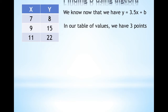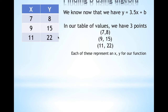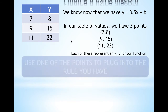In our table of values we have three points or coordinates: (7, 8), (9, 15), and (11, 22). I'm going to be using the word points and coordinates interchangeably — they mean the same thing. Each of these represent an x, y for our function — this is x, y; x, y; x, y.